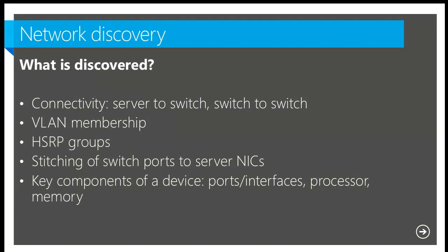For major vendors we find VLAN membership and, if it's a Cisco, it could be an HSRP group — a High Availability Group. We find those, find the members, and create relationships so they can have a roll-up if all members of your High Availability Group are available and responding. We stitch the switch ports to the server NIC so you get a visual representation of that environment — dependent on the fact that you're monitoring that server with an agent.